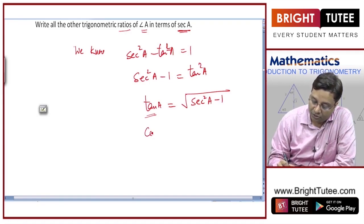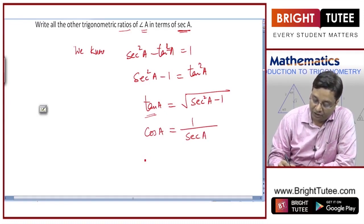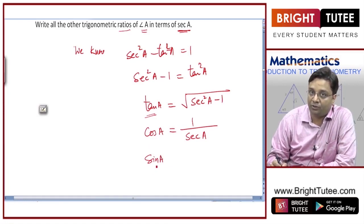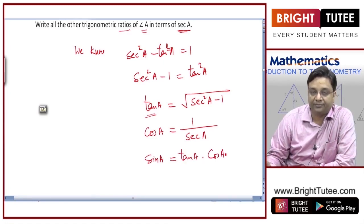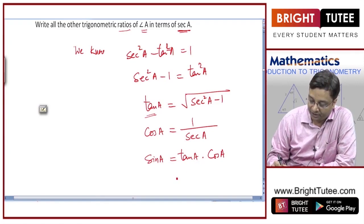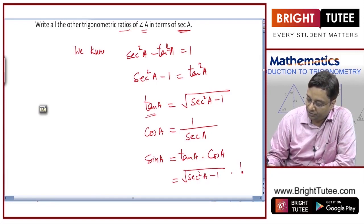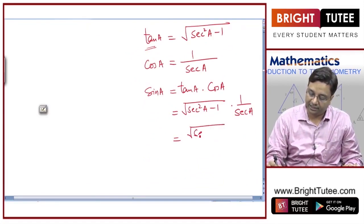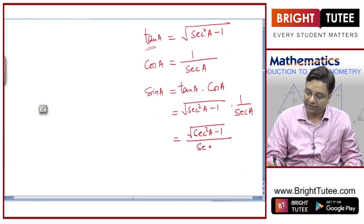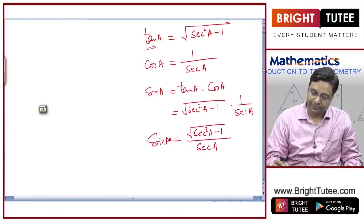Cos a can simply be written as one by secant a. For sin a, we know sin a by cos a equals tan a, so sin a equals tan a times cos a. Substituting, sin a equals square root of secant squared a minus one, divided by secant a — which can be written as square root of (secant squared a minus one) divided by secant a.